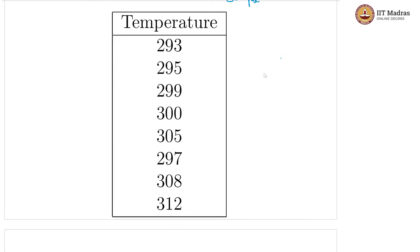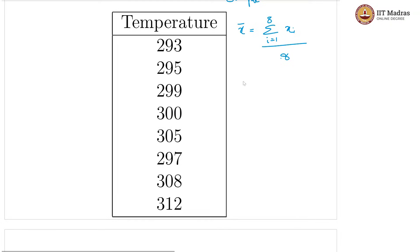This is the temperature data and we first need the mean. The mean x̄ is the sum of observations from i equals 1 to 8 of xi, divided by 8, because there are 8 observations overall. Now, for the sum, we notice that all these values are fairly close to 300.